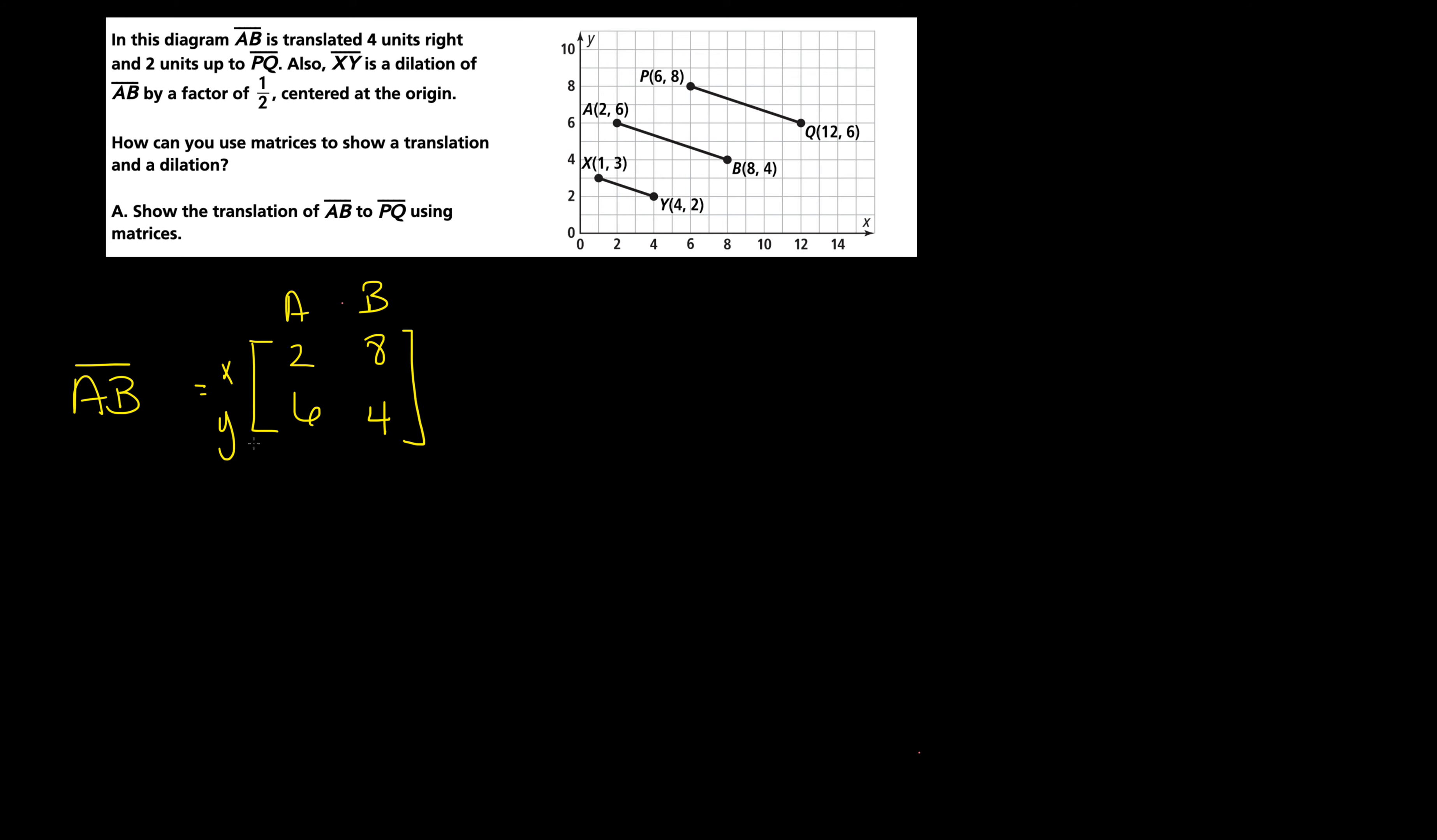So we have a translation. The translation can be represented by the matrix and it has two columns, one for A and one for B. Since the translation results in X coordinates increasing by 4, the Y coordinates increasing by 2. Looking at this we've moved the X 1, 2, 3, 4 and we move the Ys 2. Can you see this right here?